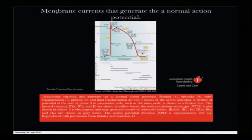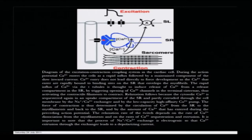The membrane current that generates a normal action potential involves multiple components: potassium, sodium, and calcium, along with several others. From the resting potential at minus eighty, there is an upstroke, early depolarization, a plateau phase, and a final repolarization phase. This slide has been taken from the American Heart Association. Sodium entry duration is three to five milliseconds, ending with closure of voltage-gated fast sodium channels, then comes the plateau where calcium entry lasts around one hundred seventy-five milliseconds, ending with the closure of calcium channels.